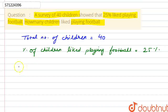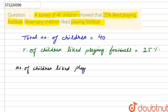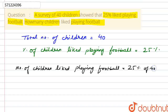We have to find the number of children that liked playing football. That number should be 25% of the total number of children, that is 40. So that should be 25% of 40. We can write this as 25 by 100 multiplied by 40.